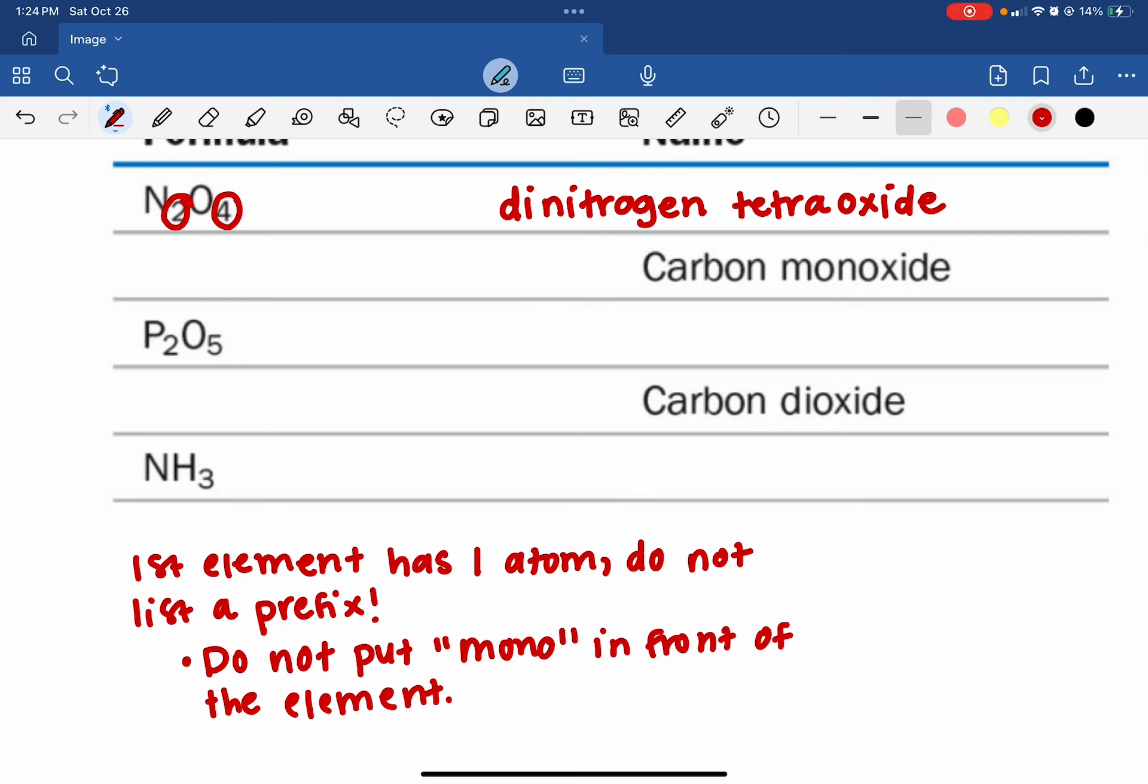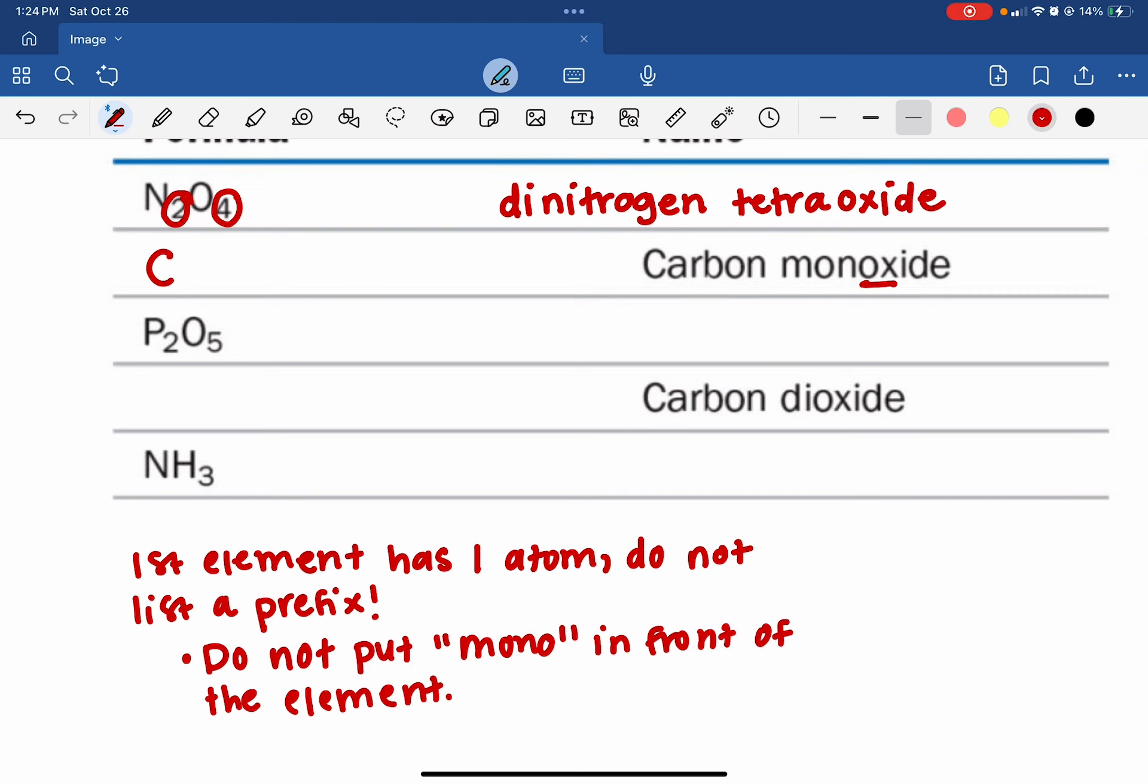In the fourth example here coming up, we don't say monocarbon dioxide, we say carbon dioxide. So if there's nothing in front of the first element, we know that there's only one atom. So carbon. We go ahead and list the second elemental symbol. The ox implies that we're dealing with oxygen, and there is a prefix of mono, which means one, and we do not list ones on the bottom of our molecular formulas. So CO is the formula for this one.